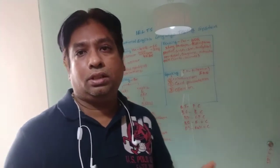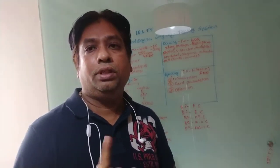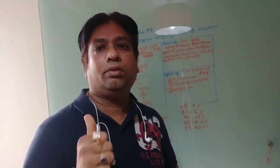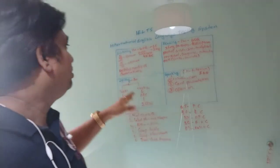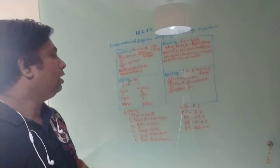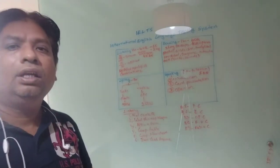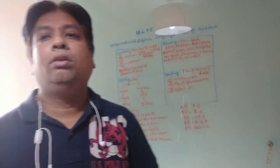In Reading you also need to achieve a minimum of 6.5, meaning at least 27 questions answered correctly. Each question carries one mark. Next is Writing, which has two parts: Task 1 and Task 2.